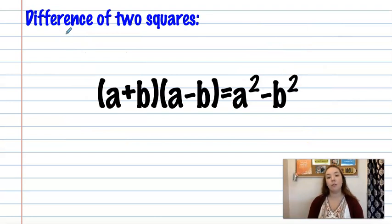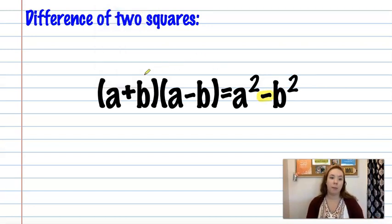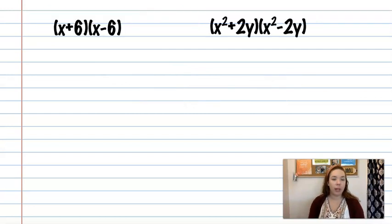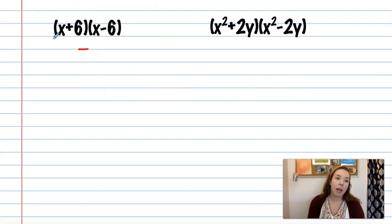When you have what we call a difference of two squares, where it's the same binomial, but just the two signs in the middle are different. This one's addition. This one's subtraction. It's just the first term squared minus the second term squared. And it will always be minus in this case because you have a positive times a negative is a negative. It's just going to be a minus in the middle. x squared is x squared. 6 squared is 36. And we're finished. That saved us so much time.